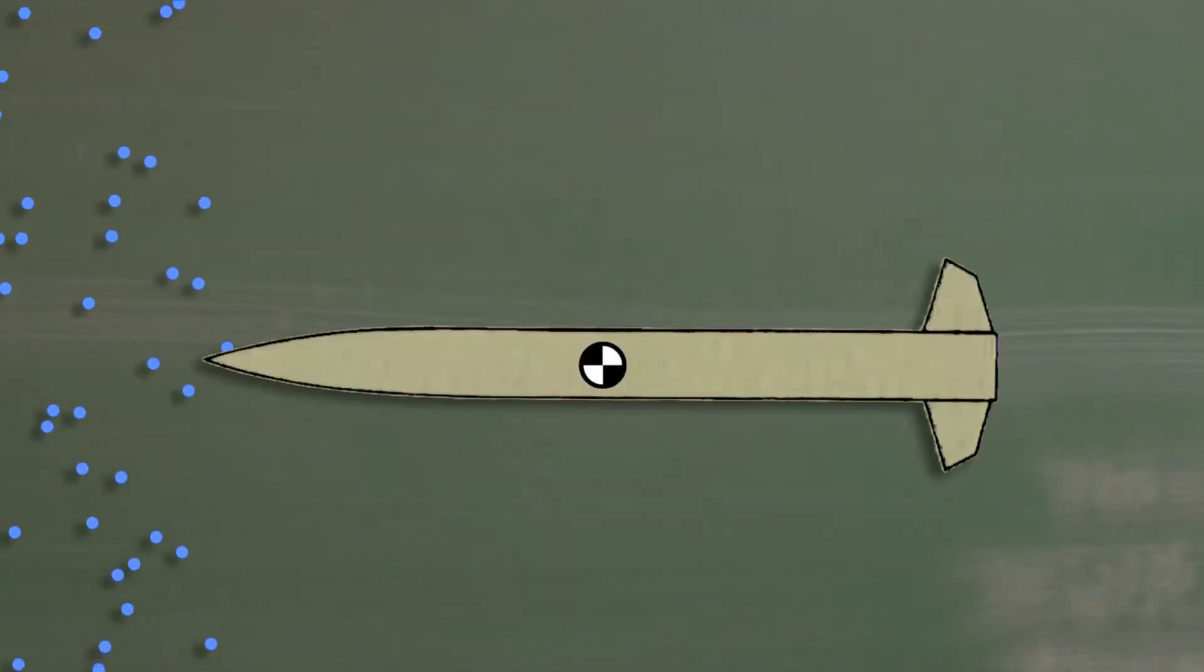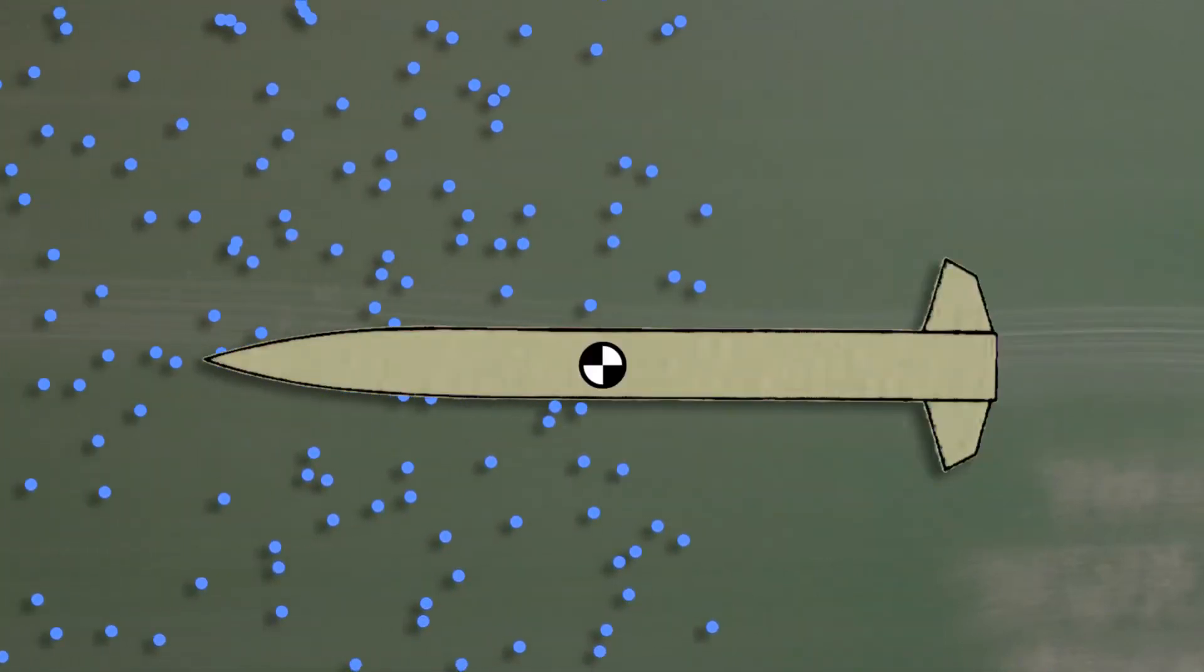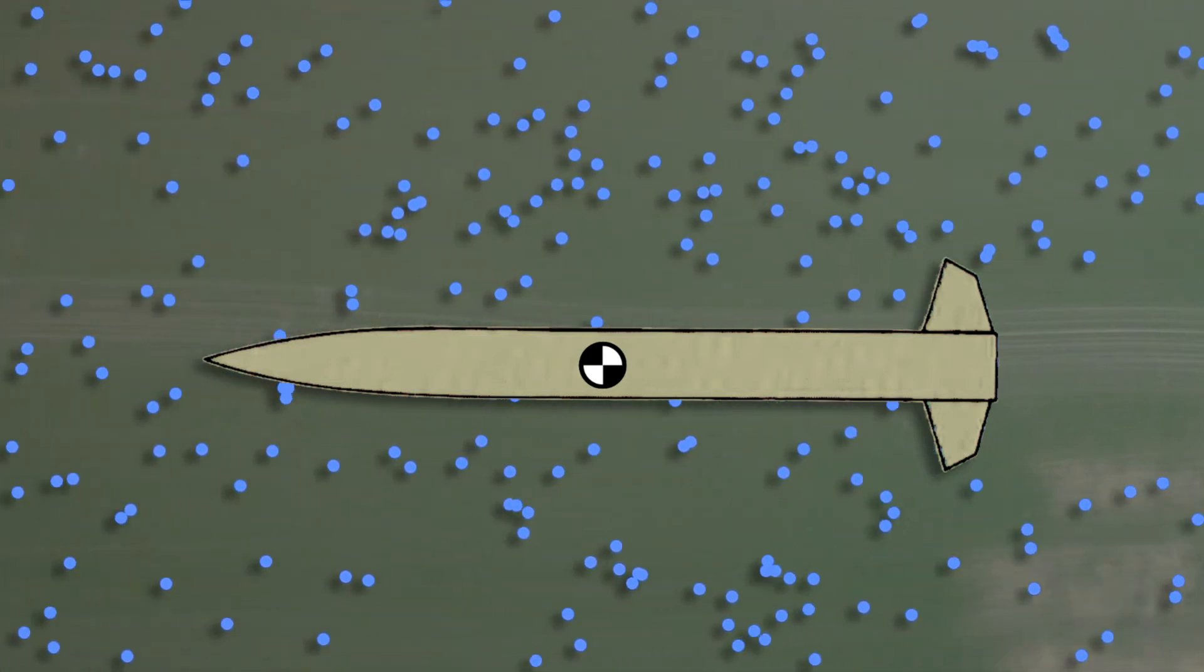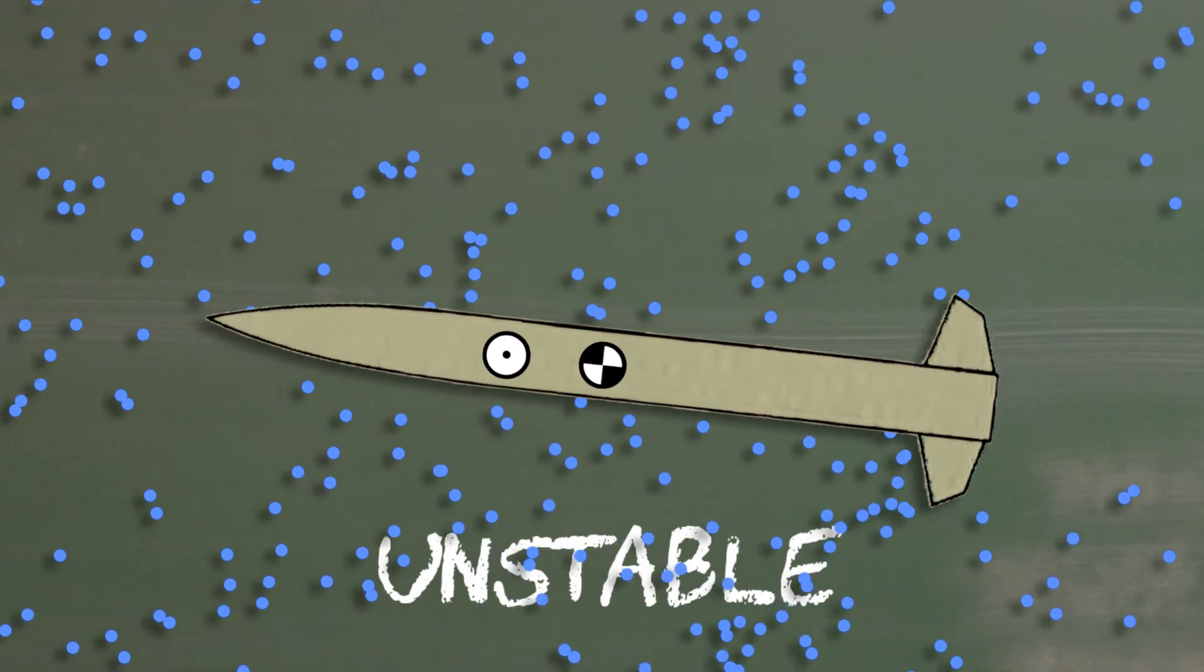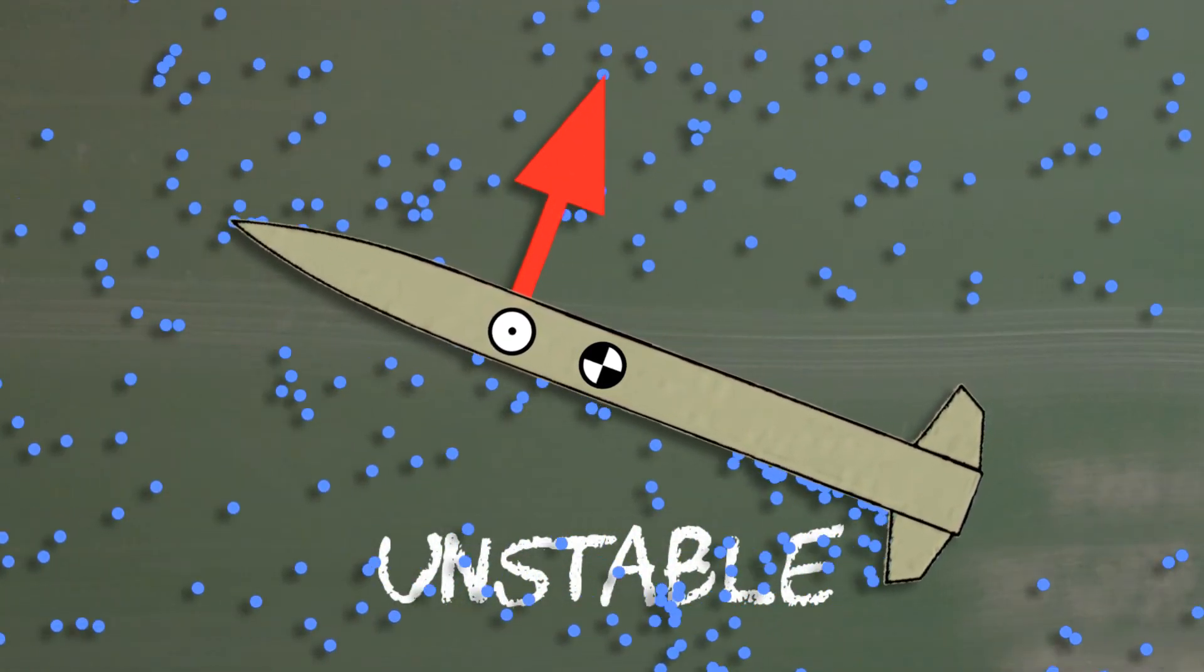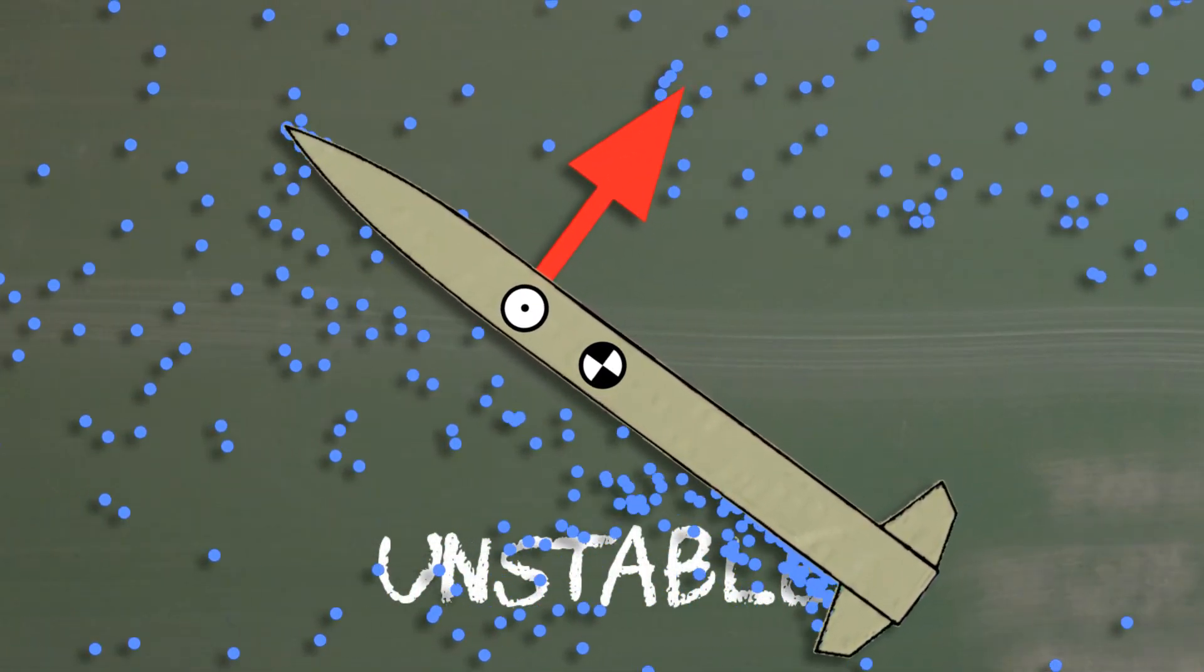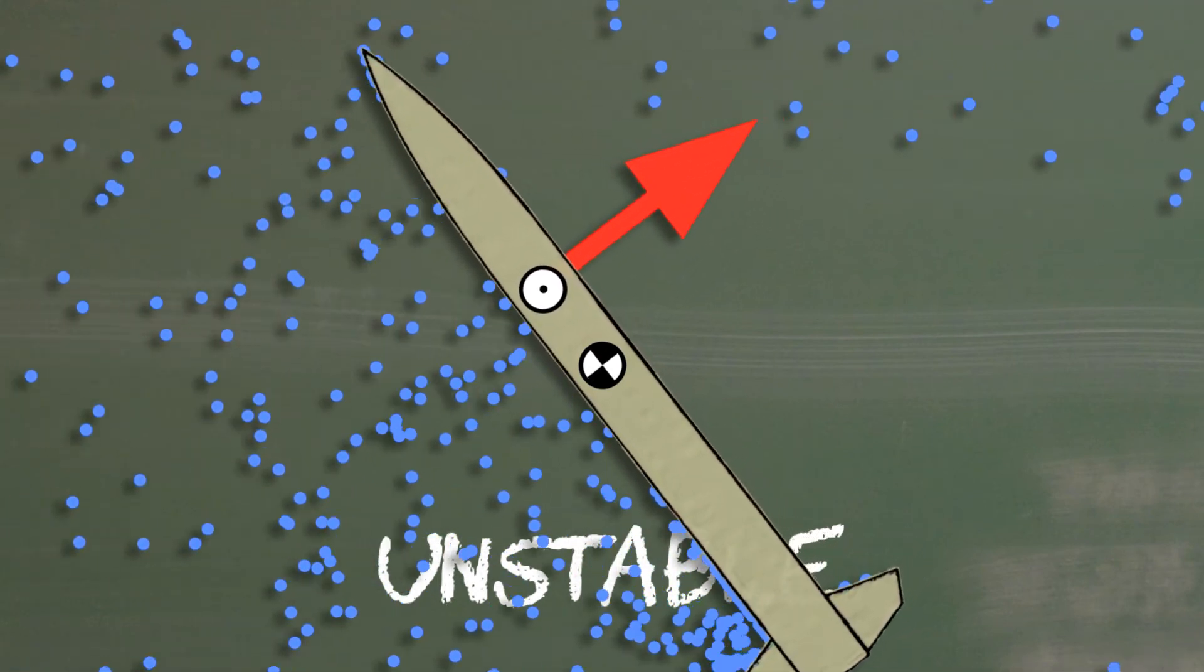Knowing this, we can work out how the relationship between the locations of center of pressure and center of mass determine the stability of a rocket. If the center of pressure is ahead of the center of mass, any small disturbance will result in a normal force and moment in the direction of the disturbance, and the rocket spinning out of control.